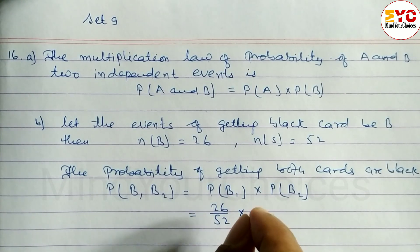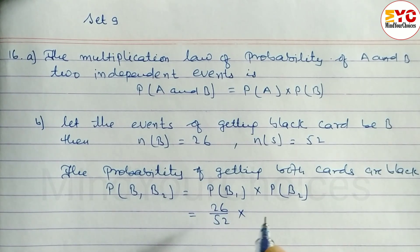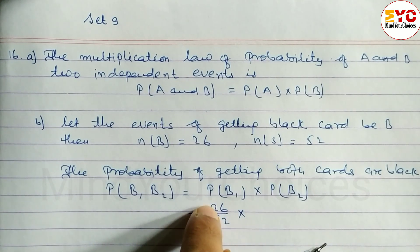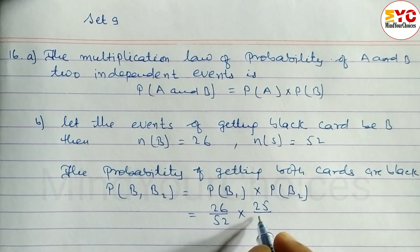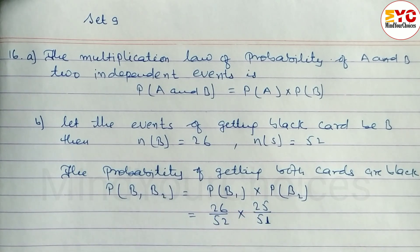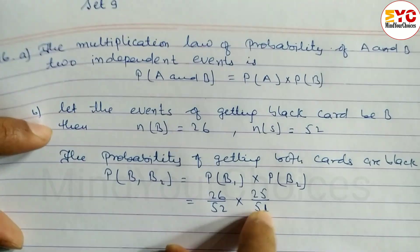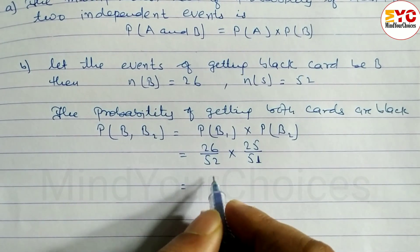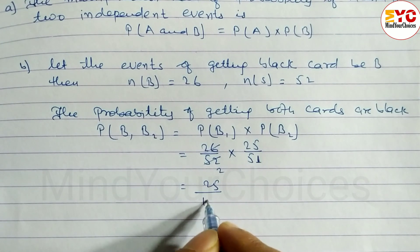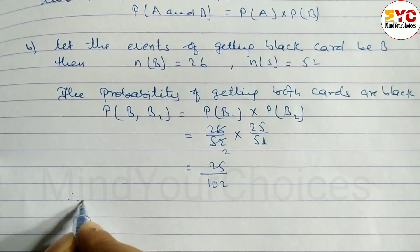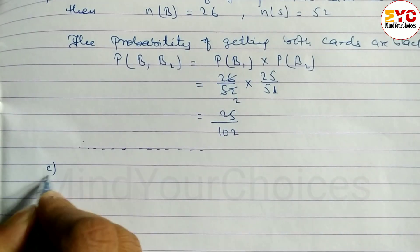First time a card is drawn: probability of black card is 26 by 52. Second time, since one black card has been removed, the remaining black cards are 25 and total cards are 51, so probability is 25 by 51. Multiplying: 26/52 × 25/51 gives us 25 by 102. Therefore, the probability of getting both cards black is 25 by 102.